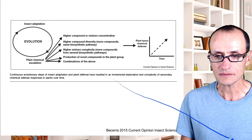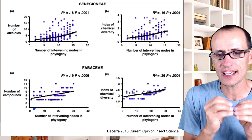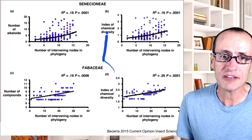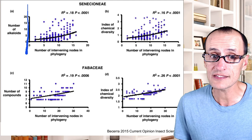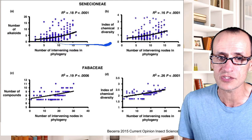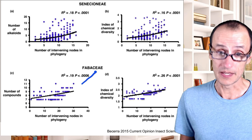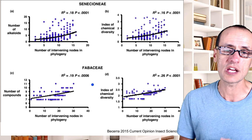What Becerra showed is that if you use the number of branching points as an indicator of how old an association may be — how many times diversification has happened — whether looking at the bean family or the aster family, there seems to be an association between the time of the plant-insect relationship and things like the number of different types of alkaloids or the diversity of those compounds over time. The longer they're in association with specialized herbivores, the more likely you get this diversification of chemistries.